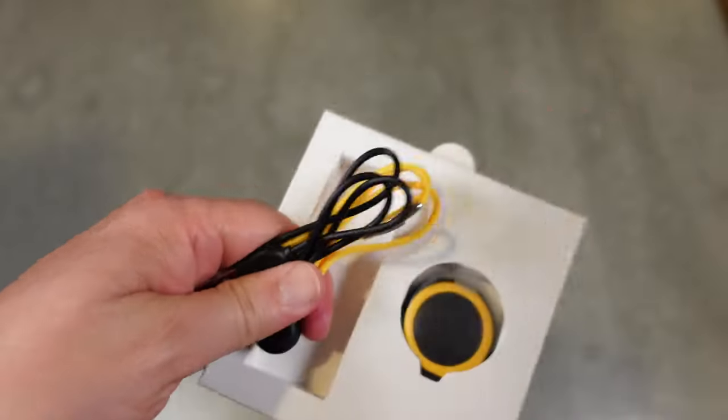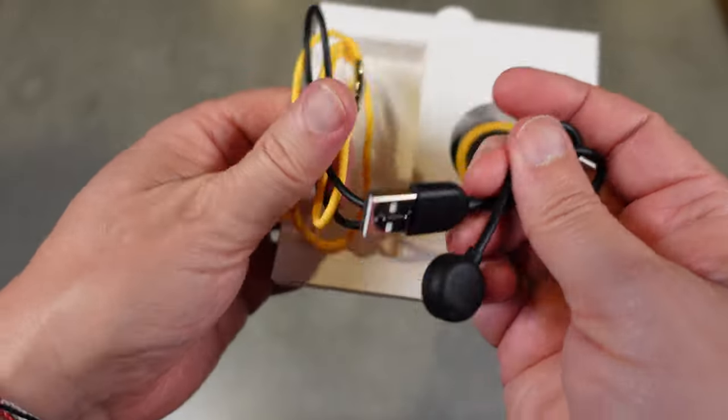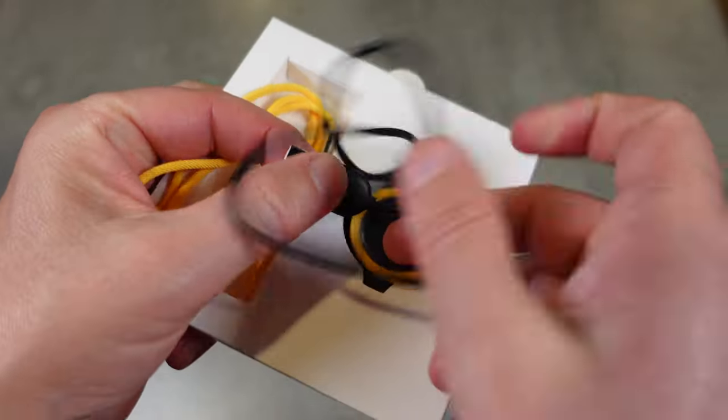The charging cord has a little magnetic thing on the end with two little prongs.